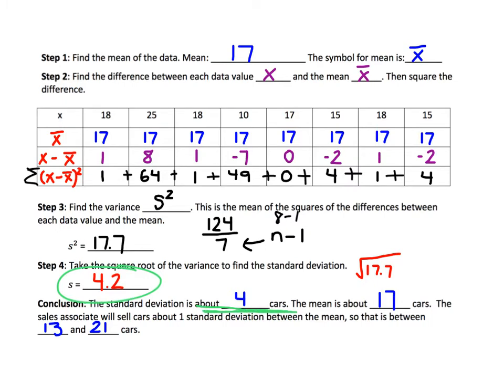The mean we calculated was 17 cars. If the sales associate sells within one standard deviation of the mean, and one standard deviation is 4 cars, we take 17 minus 4 to get 13 (one standard deviation below the mean) and 17 plus 4 to get 21 (one standard deviation above the mean). So the sales associate would sell between 13 and 21 cars.